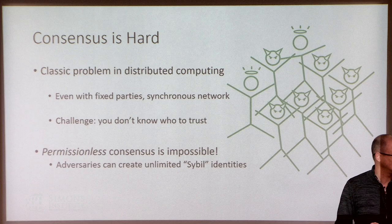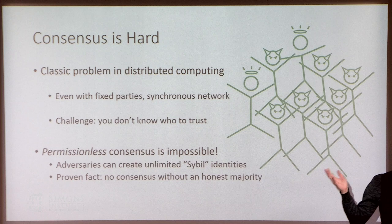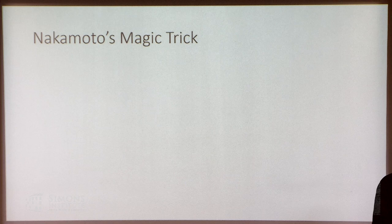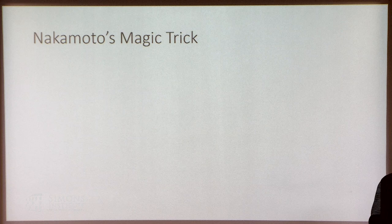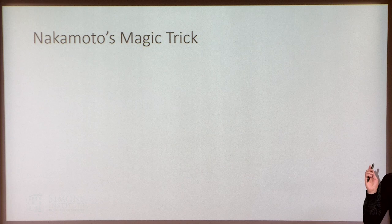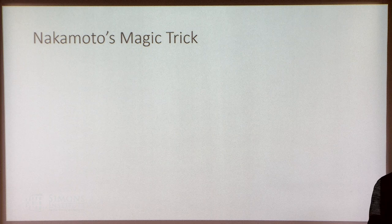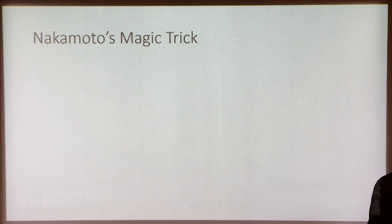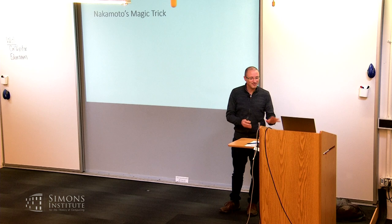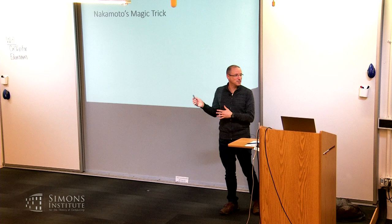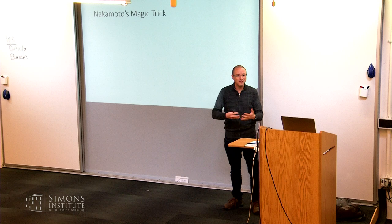We need an honest majority, but we can't get that in the basic model. Byzantine agreement requires an honest majority, and permissionless consensus is impossible in the standard model. There are various differences in definitions, and the slide is imprecise — it didn't include all the statements under which the impossibility is true. We agree that we need to do something different.